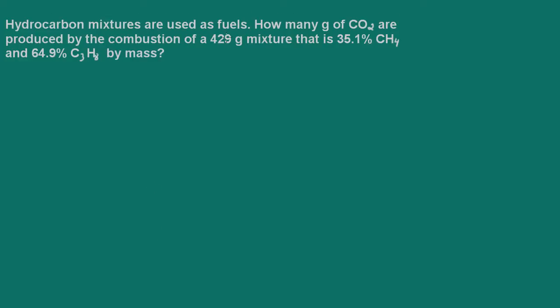Hydrocarbon mixtures are used as fuels. So we're being asked how many grams of carbon dioxide are produced by the combustion of a 429 gram mixture that is 35.1% methane, CH4, and 64.9% propane, C3H8. And they want this answer in grams.